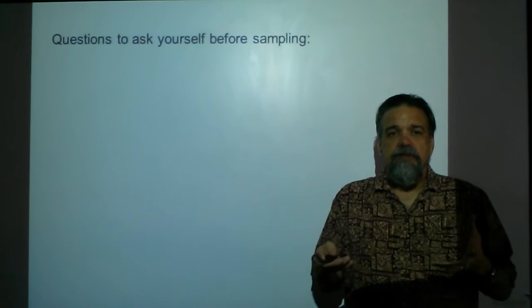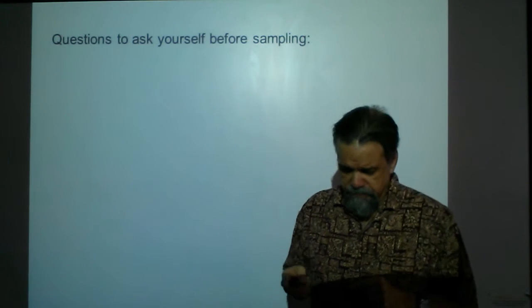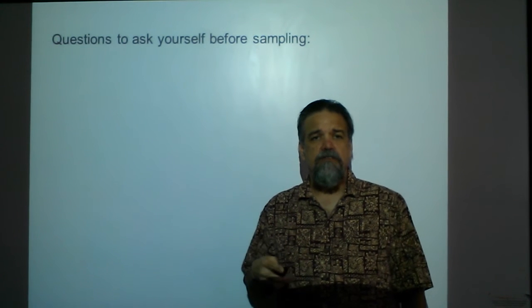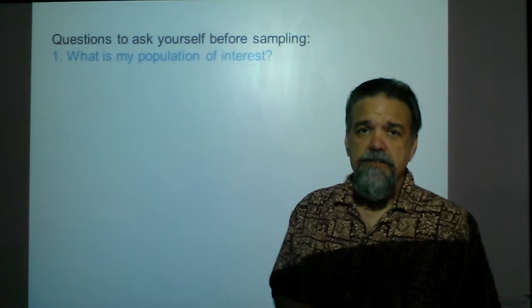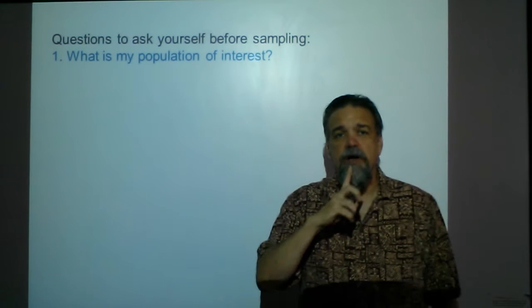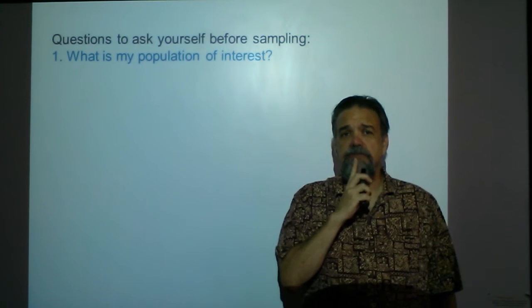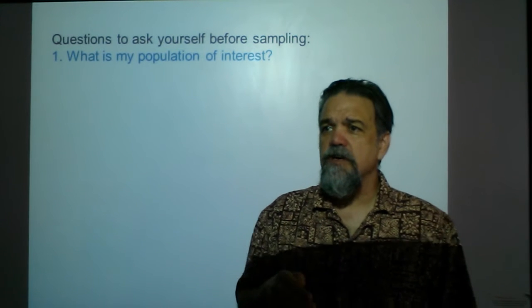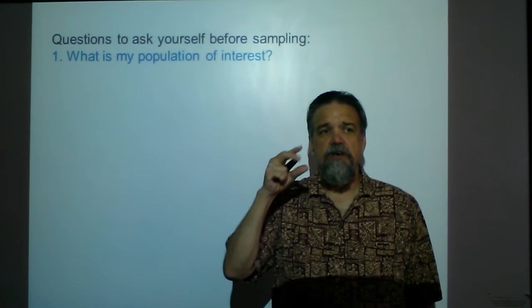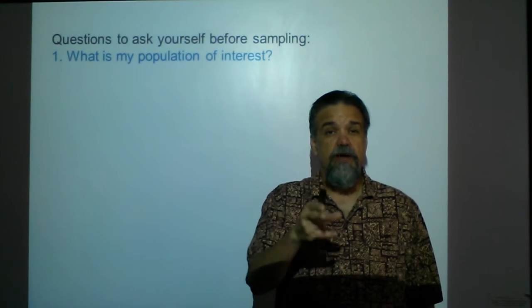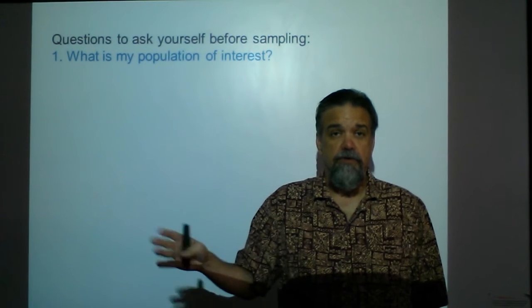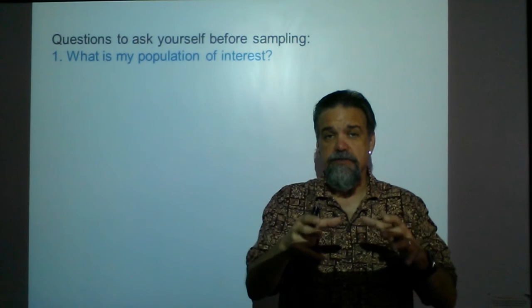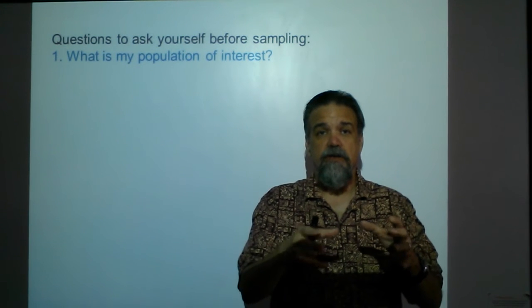Before we start sampling or running a survey, we have to ask ourselves some key questions. Let's say I want to know what percentage of Texas voters support Bernie Sanders. The first question is: exactly what is my population of interest? Really, I'm interested in who's going to vote for him in the Texas primary, so my population of interest is people who are registered to vote and plan to vote in the Democratic primary.